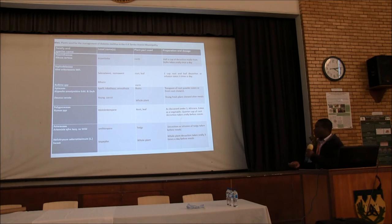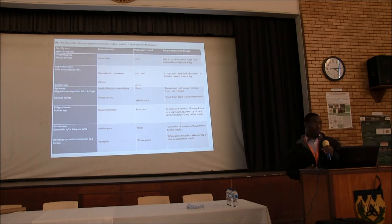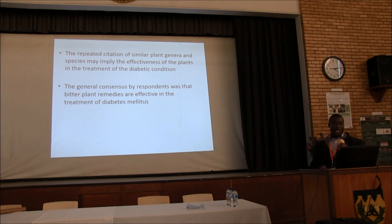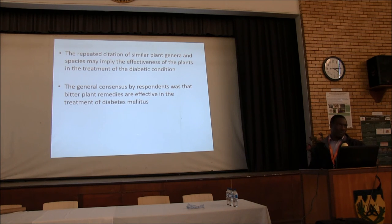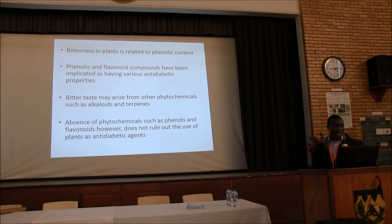This is a short list of the plants — there are many and there is no way to present all of them. As you can see, the family name, local name, plant parts, and preparation method are all recorded. The general consensus by respondents was that bitter plants are effective in the treatment of diabetes. Bitterness in plants is related to phenolic content, and phenolic and flavonoid compounds have been indicated as having anti-diabetic properties. However, bitter taste may also arise from other phytochemicals such as alkaloids and terpenes.